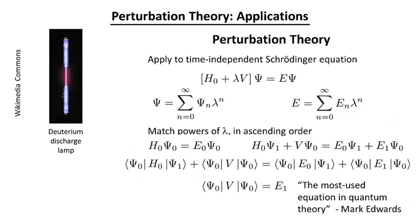I always return to first principles, which are defined by this equation. The basic idea is you have some model Hamiltonian and then a correction to it, which is proportional to the parameter lambda. And then both the wave function and the energy are to be expanded in powers of lambda.